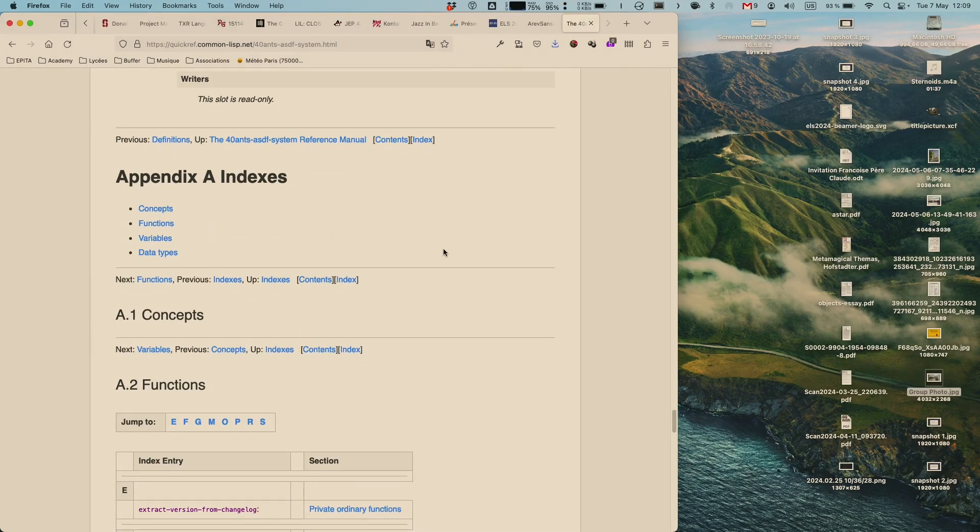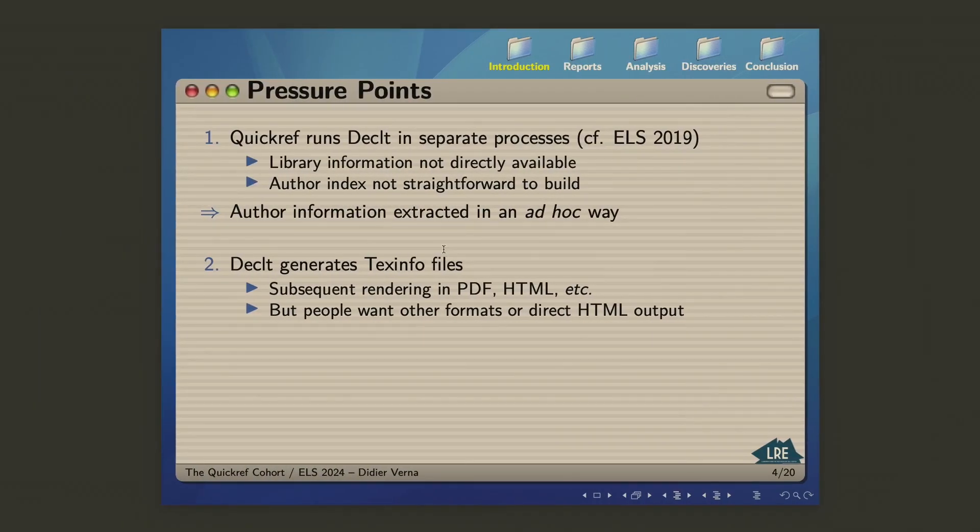So this is the QuickRef website, and this is how a current reference manual for a library looks like. I'm old-fashioned maybe, I'm satisfied with that. But some people would like fancier HTML rendering and stuff like that. So this is one reason to put aside the TechInfo generation and write another layer which would output direct HTML rendering with maybe a fancier layout or something. So that's the second pressure point that I have on my shoulders right now.